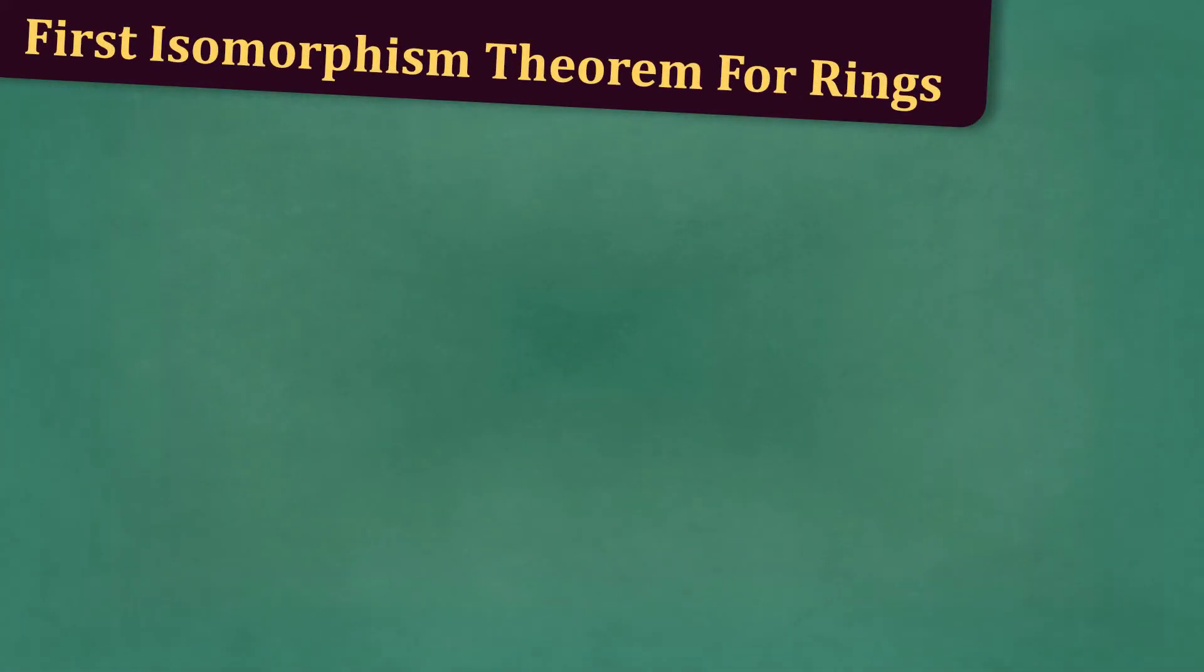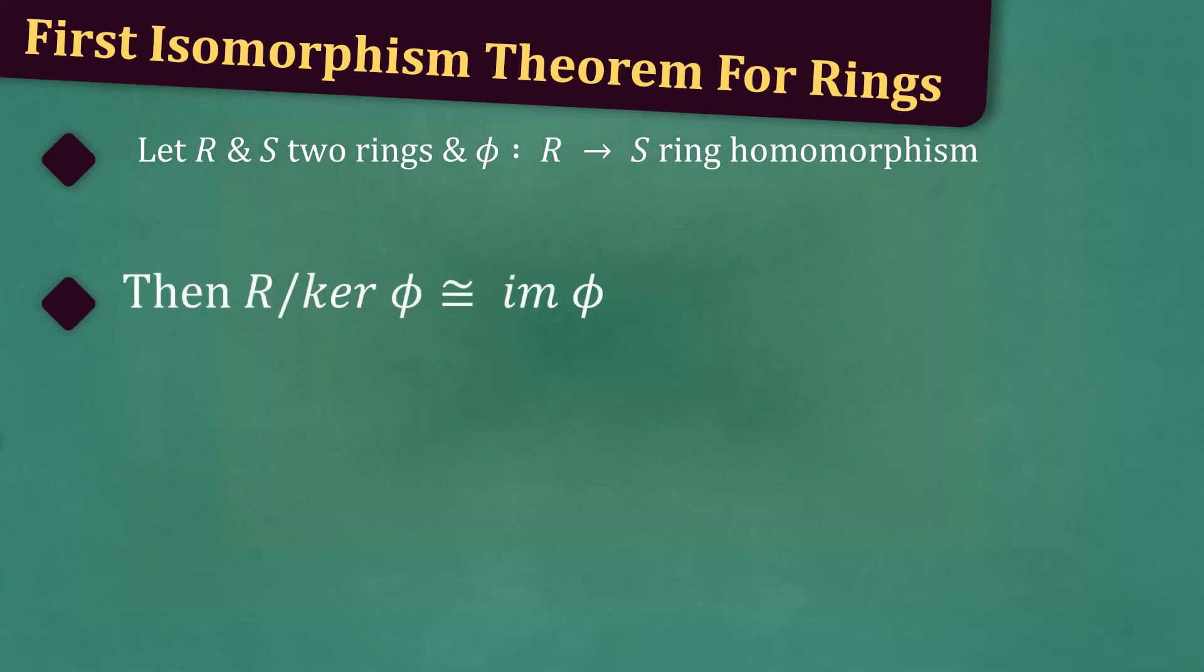Now, let's state the first isomorphism theorem for rings. Let R and S be two rings, and let phi from R to S be a ring homomorphism. Then, R quotient ker phi is isomorphic to im phi.